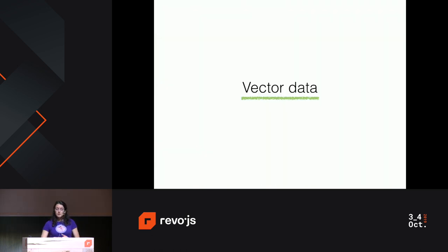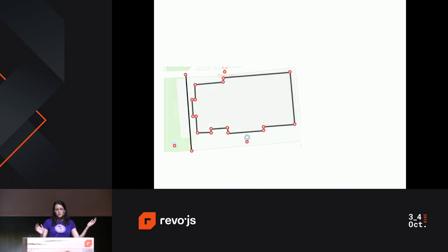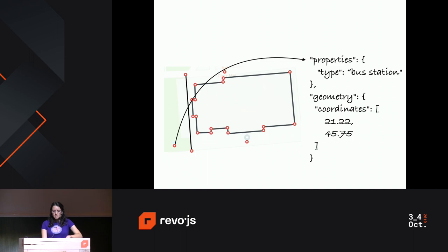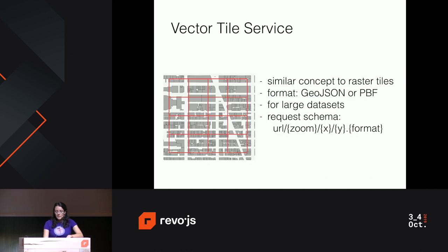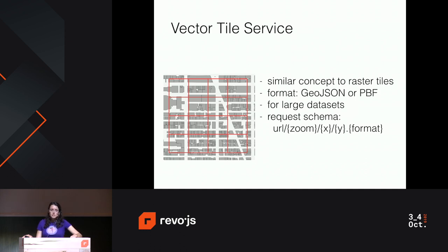Next up for the data, we have vector data. Vector data is basically just vertices — a polygon is an array of vertices where the first vertex is the last vertex. Lines are similar, and for points you basically just have one vertex. A feature can have some properties telling you what it is, and you have to have the geometry, which is more than just an array of numbers — latitude and longitude. If you want to load this kind of data on the web, I'm going to talk about the vector tile service because this is something I used in my app. The concept is similar to raster tiles, just this time you don't tile images, you tile vectors. The format can be GeoJSON or Protobuffer. Protobuffer is more common because it's more compact and faster to download — we usually use it for large data sets.